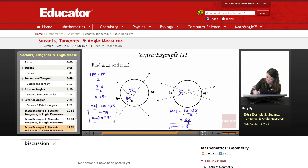And then to find measure of angle 2, it's supplementary. So 180 minus 51, and that's going to be 129 degrees.